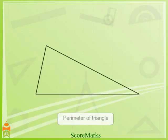Now, let us learn perimeter of triangle. The sum of lengths of the sides of a triangle is the perimeter of the triangle.